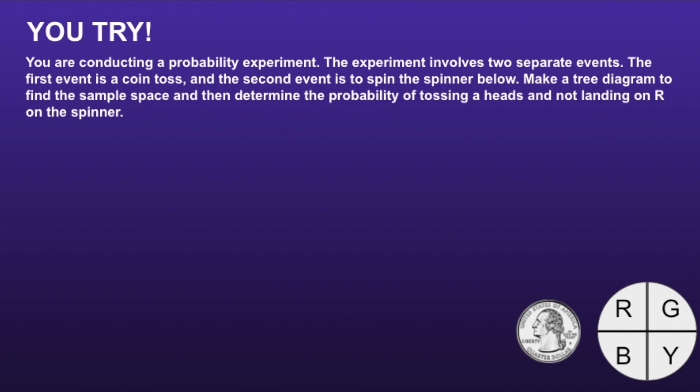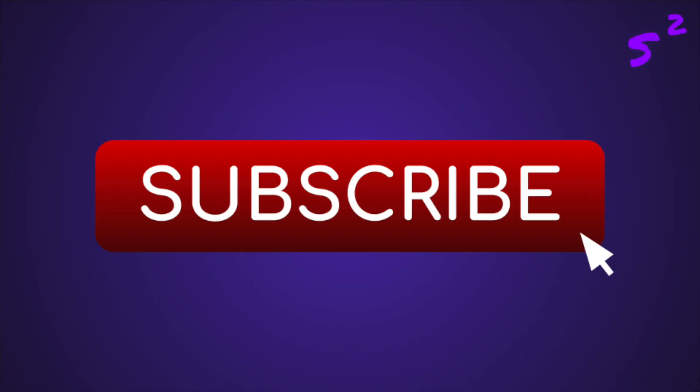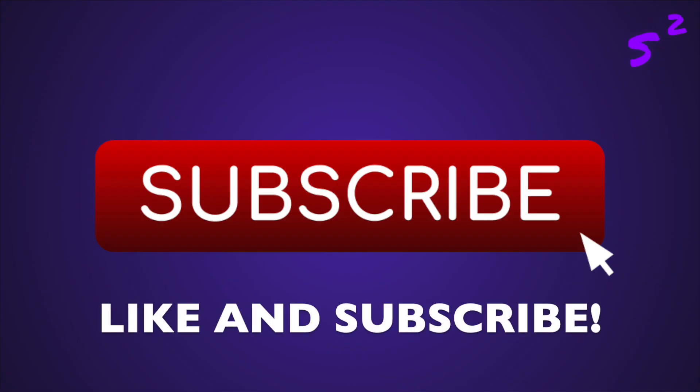Okay, let's take a look. The probability of landing on heads and not landing on R is 3 eighths. If you had this incorrect, I would recommend you pause the video, review your tree diagram, and see if you can find your mistake. Thank you for watching! Scam Squad!